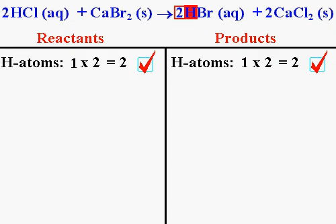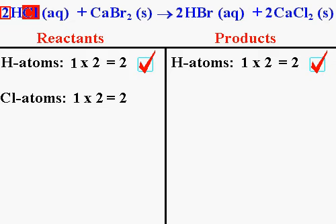Let's move on to the next atom — Cl. In HCl, there are also chlorine atoms, so we've got to balance those as well. In HCl, there is no subscript after the Cl, so there's just one Cl atom in every molecule of HCl. There's a two in front of HCl, meaning I have two of those molecules. I take the number of Cl atoms in a molecule, one, and multiply by the total number of HCl molecules, two. That gives two chlorine atoms on the reactant side.